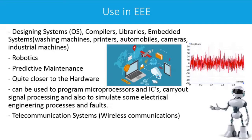C++ can also be used to design compilers and libraries. You can work with embedded systems — systems integrated in washing machines, printers, vehicles, cameras, and industrial machines. It can be used in robotics, in predictive maintenance where you program something that predicts the time for maintenance based on signals and indicators. It works very close to the hardware and can also be used to program microprocessors, integrated circuits, do signal processing, simulate electrical engineering processes, and is widely used in wireless communications and telecommunications.